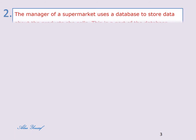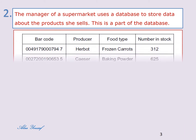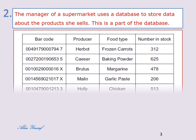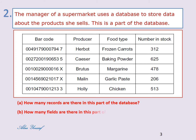Question number two: the manager of a supermarket uses a database to store data about the products she sells. This is part of the database. A) How many records are there in this part of the database? B) How many fields are there in this part of the database?